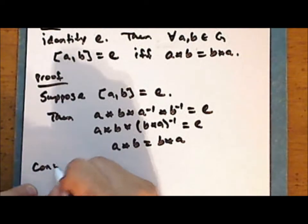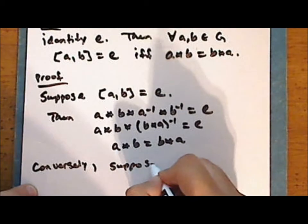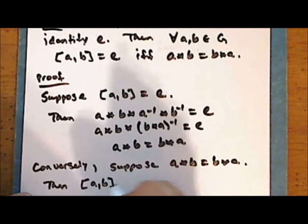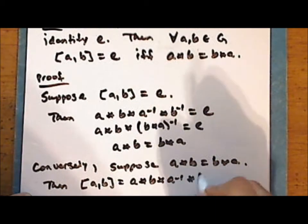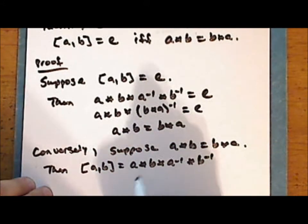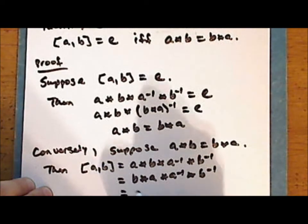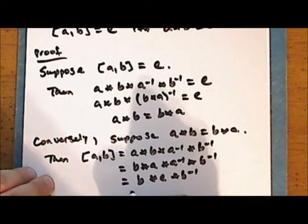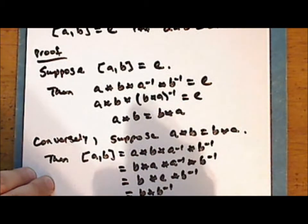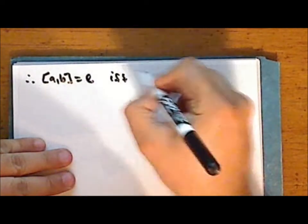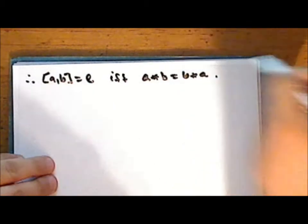Conversely, suppose that a star b equals b star a. Then the commutator of a and b is a star b star a-inverse star b-inverse. Since a star b equals b star a, we have b star a star a-inverse star b-inverse, which is b star b-inverse, which is the identity. Therefore the commutator equals the group identity if and only if the elements commute.